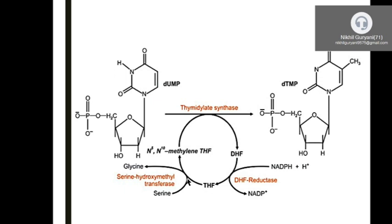Two important anticancer drugs — 5-fluorouracil and methotrexate — inhibit this step. Methotrexate inhibits dihydrofolate reductase (DHF reductase), blocking dTMP synthesis. This is how these anticancer drugs hamper DNA synthesis in cancer cells.